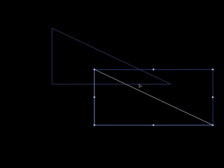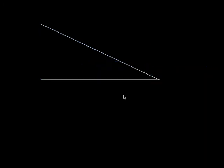That was actually a special triangle because all three sides were nice whole numbers. It's not all that often that when you have a right triangle, all three sides are nice whole numbers. Usually at least one of them is a square root of something.